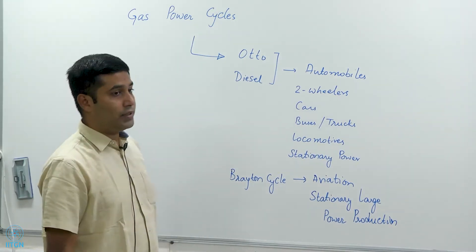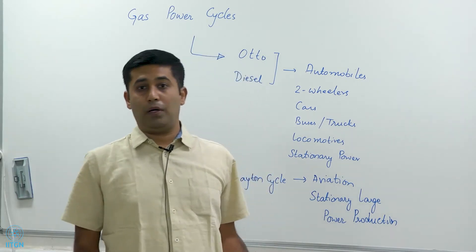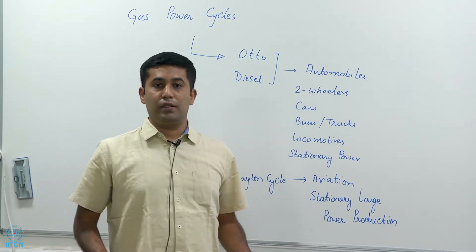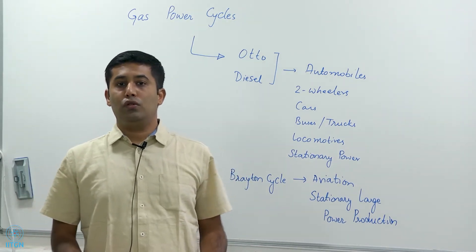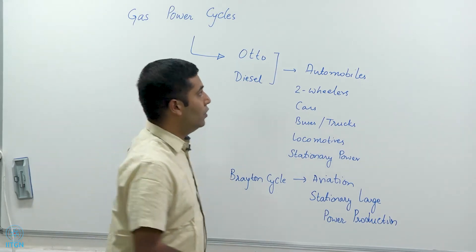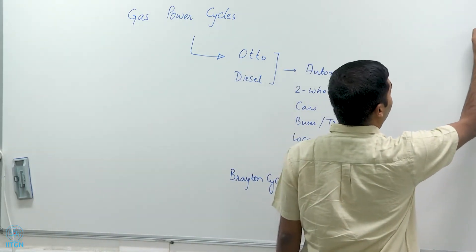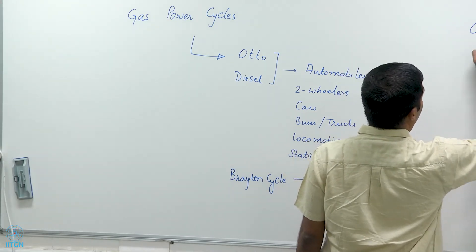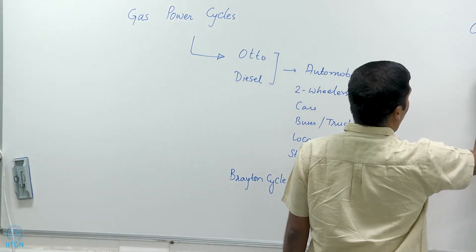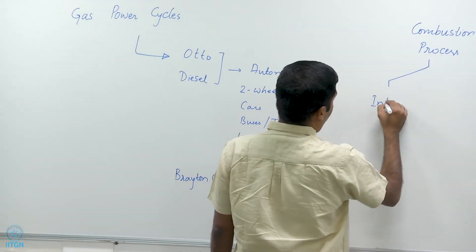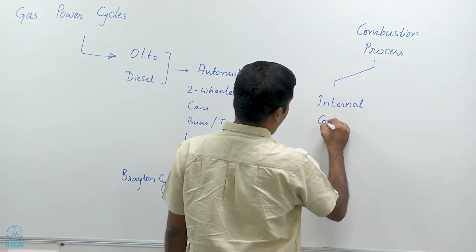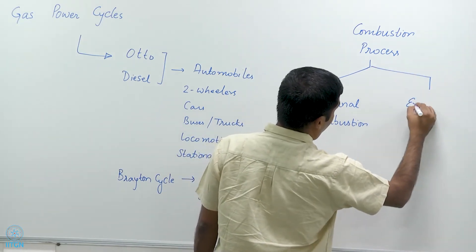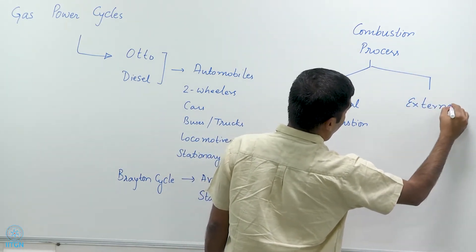While we have classified power cycles as vapor power cycles and gas power cycles, another way to classify engines that produce mechanical or electrical power is to look at how the combustion process occurs — another classification by combustion process. One way is an internal combustion engine, and the other is external combustion.